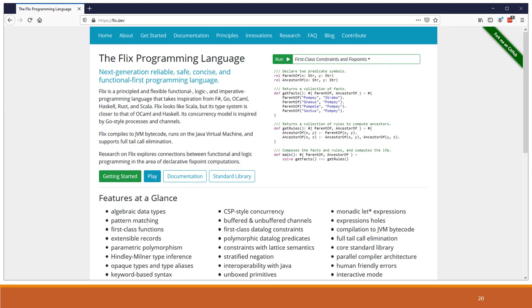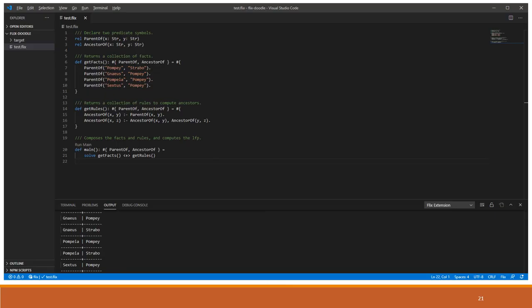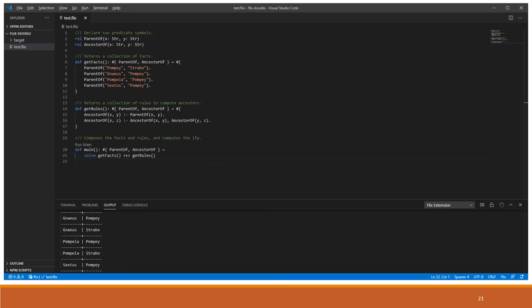Okay, finally, I just want to say there is a website for the programming language with our implementation. You can go look at it. There is a Visual Studio Code plugin you can use. And in summary, we have proposed Datalog programs as first-class values in a functional language. We have formalized our system in a minimal calculus. We presented a type system, proved its correctness. We present an algorithm to determine whether an expression is stratified. We think our technique solves a useful problem and it's freely available and ready for use.